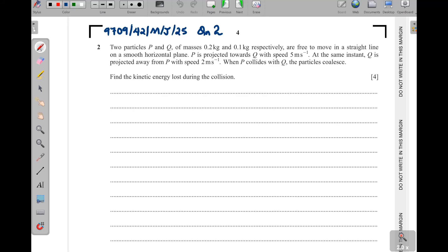Question 2 is coming from Momentum, and they are saying two particles P and Q of masses 0.2 and 0.1 kilograms respectively are free to move in a straight line on a smooth horizontal plane. P is projected towards Q with speed 5 meters per second.